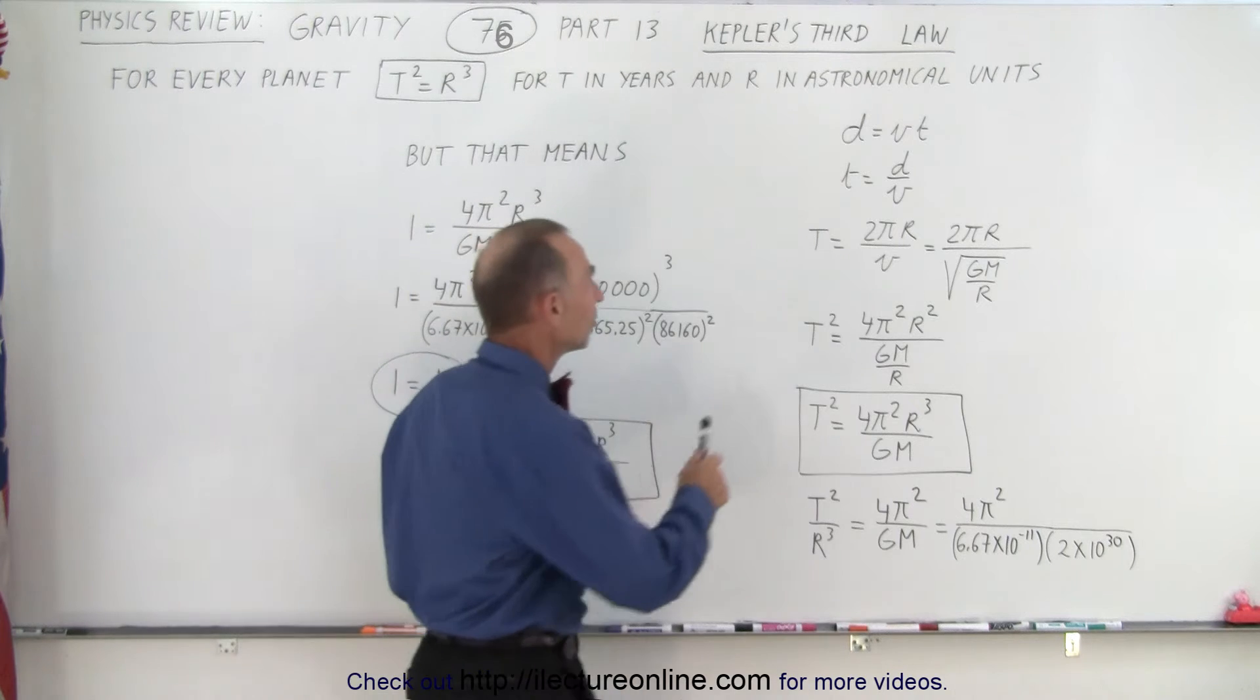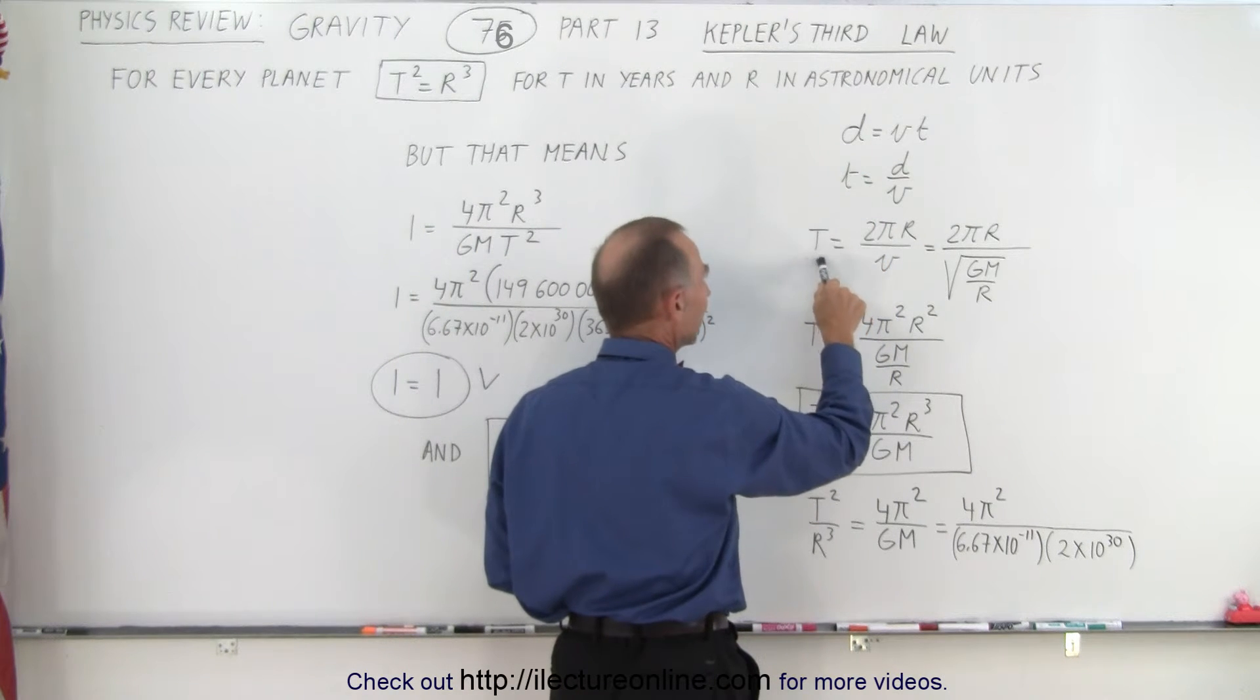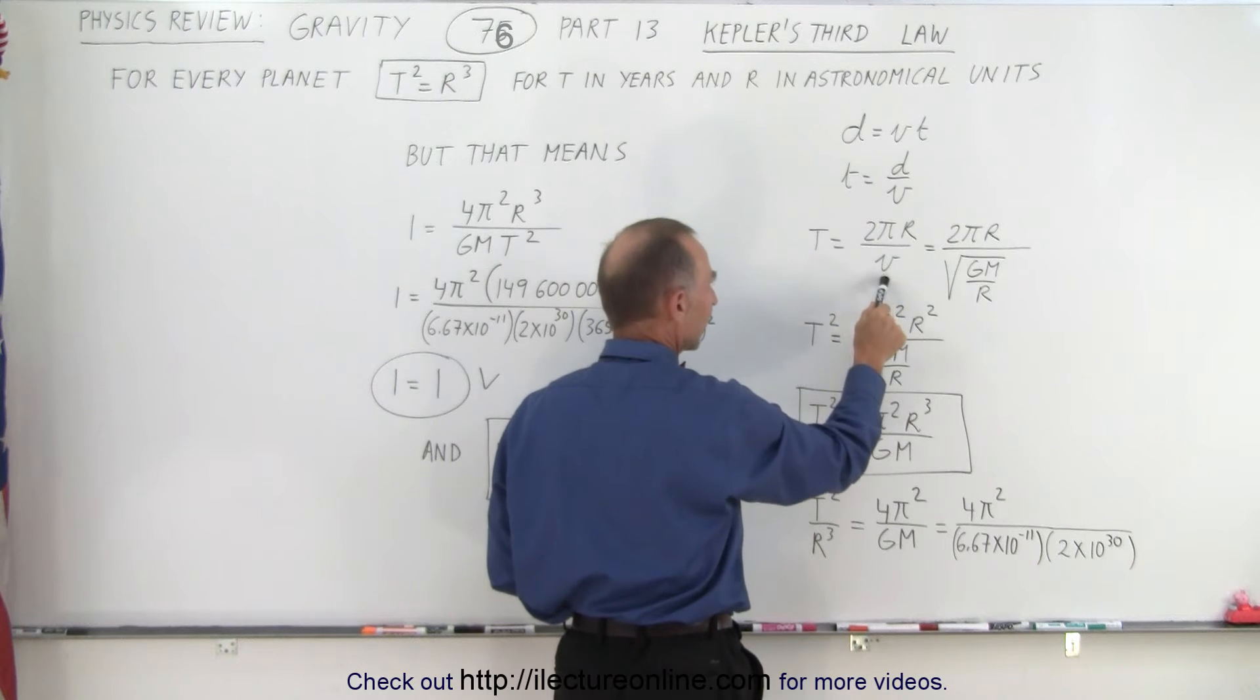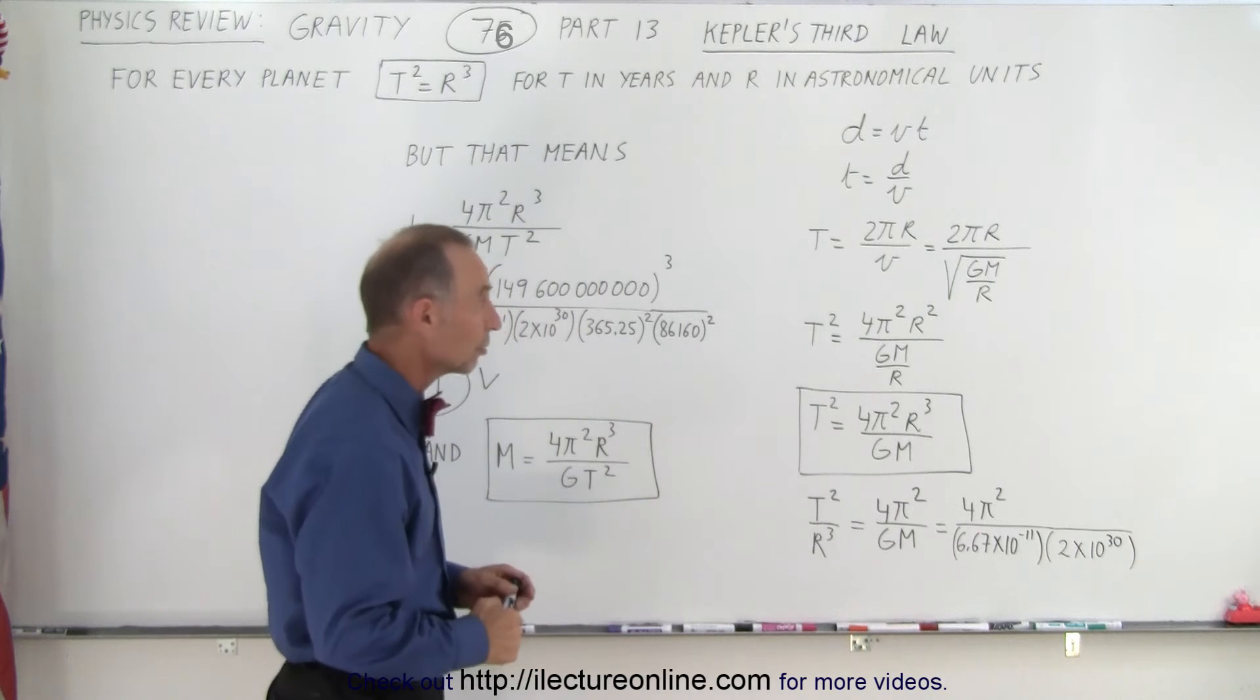So if we take that the distance equals velocity times time, and we solve for time, and therefore we solve for the period, the orbital distance is 2πr divided by the velocity, which can be calculated by taking the orbital velocity equation.